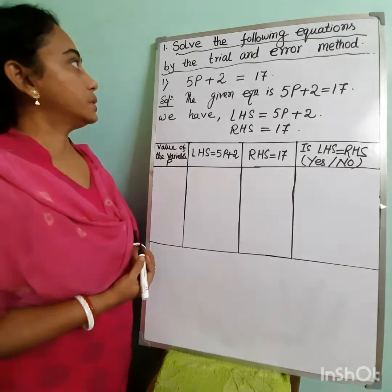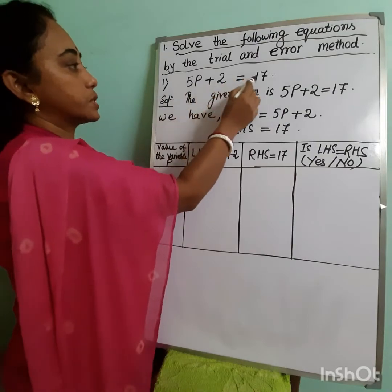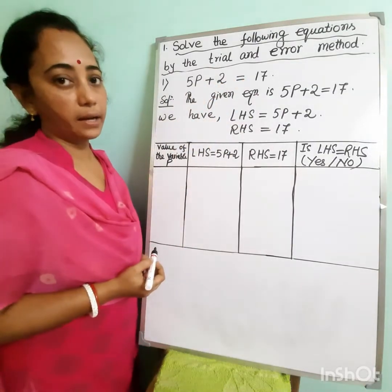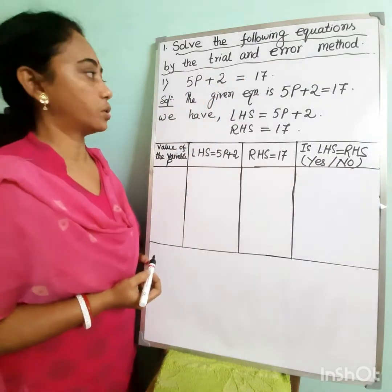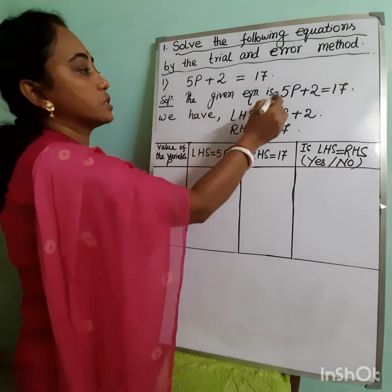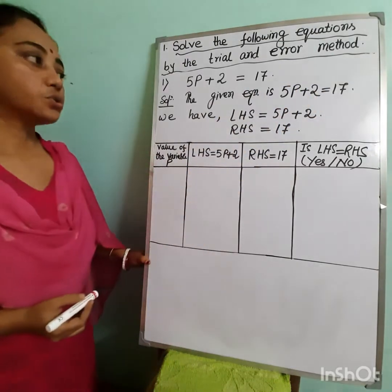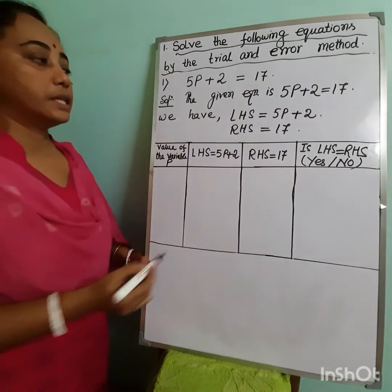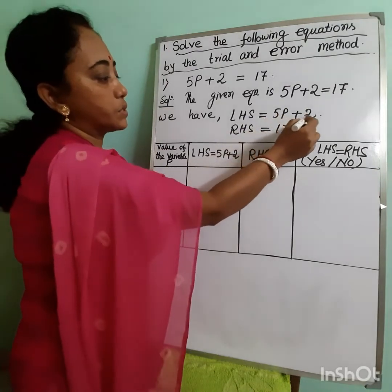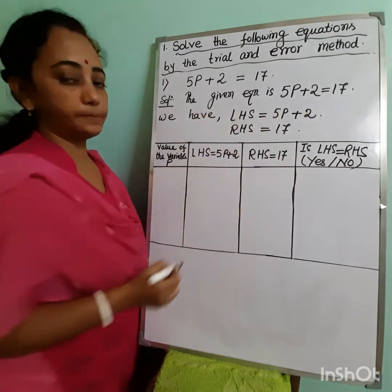Let us do one example: solve the equation 5p + 2 = 17 by using the trial and error method. Here the given equation is 5p + 2 = 17, so left hand side equals 5p + 2 and right hand side equals 17.